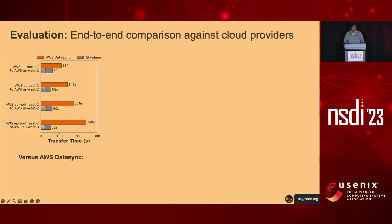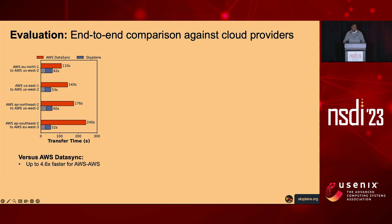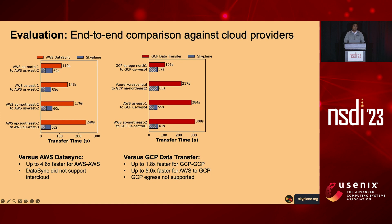How fast is Skyplane in practice? We compare against cloud provider vendor tools. Against AWS DataSync—AWS's recommended tool for bulk data transfer between regions—we are up to 4.6 times faster for AWS-to-AWS transfers. Against GCP Data Transfer, we are up to 1.8 times faster for intra-cloud transfers and up to 5 times faster for inter-cloud transfers; GCP doesn't support egressing to destinations outside GCP. Against AZ Copy—Azure's bulk data transfer tool—Skyplane is uniformly faster, with slightly smaller gains because AZ Copy leverages compute inside the Azure Blob storage service.